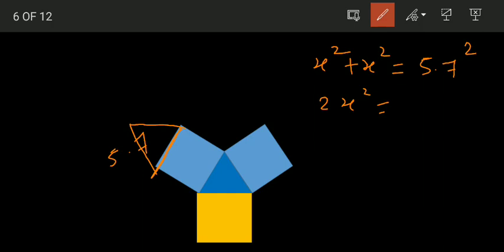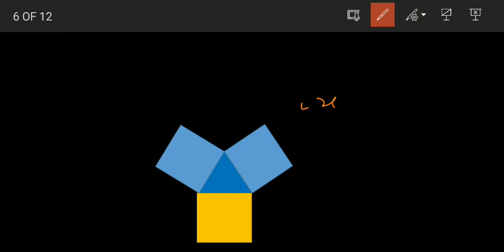So 2x² is equal to 5.7² which is 32.49. How we found it? We found 5.7 multiplied by 5.7, so we have this number.